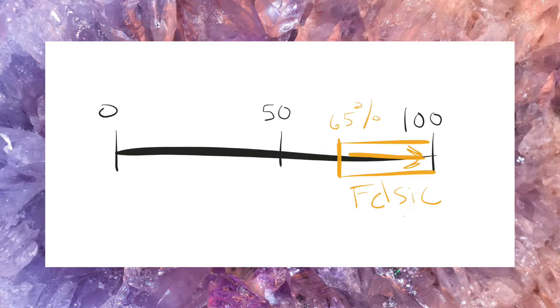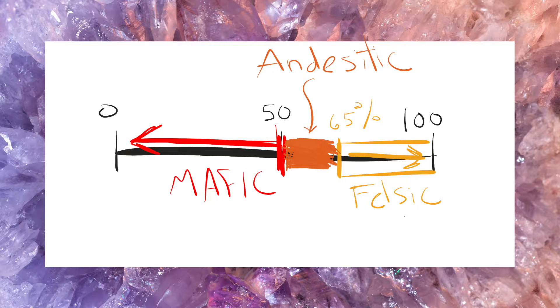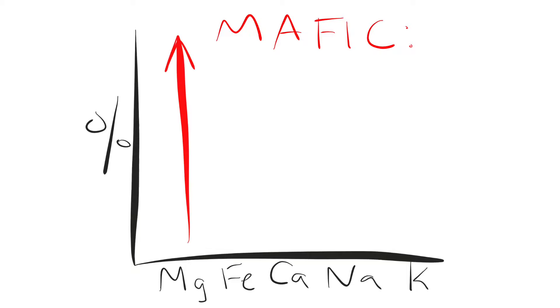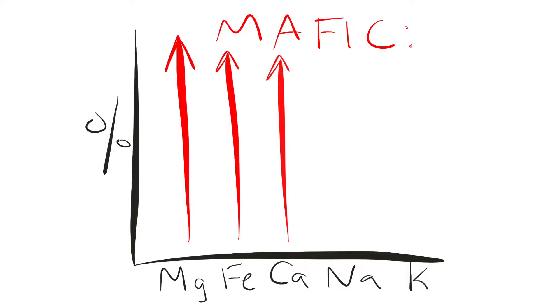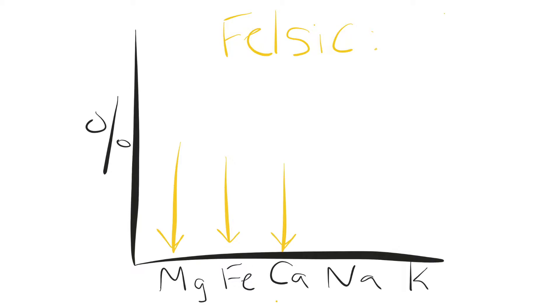The types of magma are partly defined by the percentage of silica present in them. Felsic magma has the highest amount of silica at 65%. Mafic magma has 50% silica or less. Acidic magma is in between felsic and mafic, somewhere between 50 and 65%. Mafic magma has the highest percentage of magnesium, iron, and calcium, and the lowest percentage of sodium and potassium. Felsic magma is essentially mafic magma's evil twin — lowest amount of magnesium, calcium, and iron, and the highest amount of sodium and potassium.